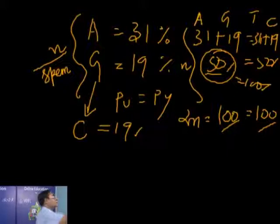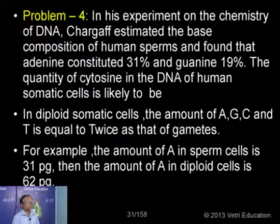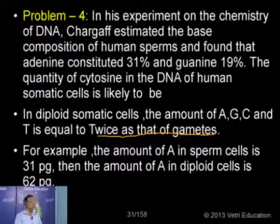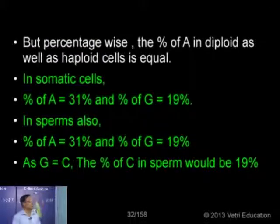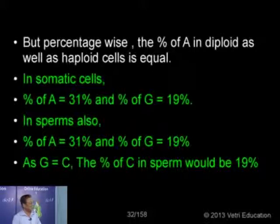In this problem, in diploid somatic cells the amount of DNA is twice that of the gamete — if you are calculating the weight, not in terms of percentage. For example, the amount of A in a haploid cell is 31 picograms; in diploid cell it is 62 picograms — it is being doubled. But percentage-wise, the percentage of A in diploid as well as haploid cells is equal. So in somatic cells, percentage of A is equal to 31 and G is equal to 19. In sperm also, percentage of A is 31 and G is 19. As G is equal to C, the percentage of C would be 19%. There is no change with reference to percentage — changes occur only with reference to weight, either in diploid or haploid cells.